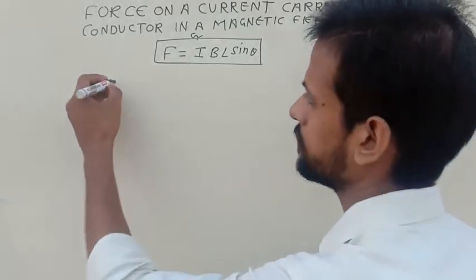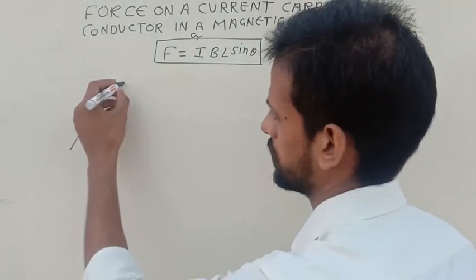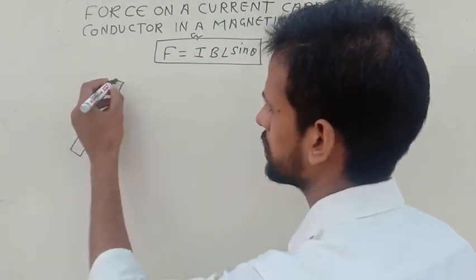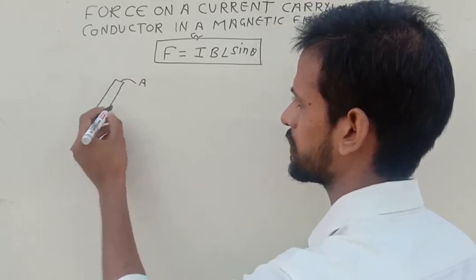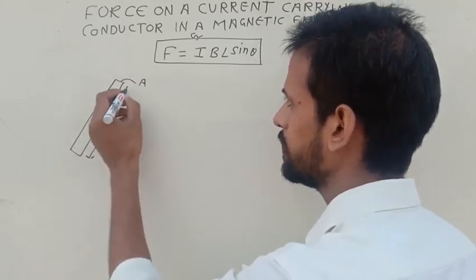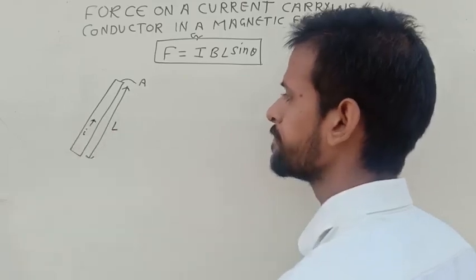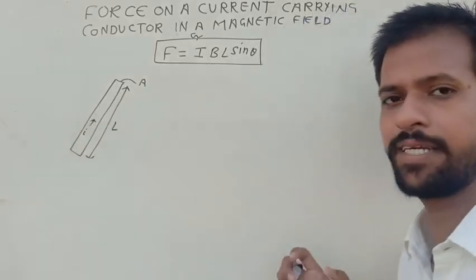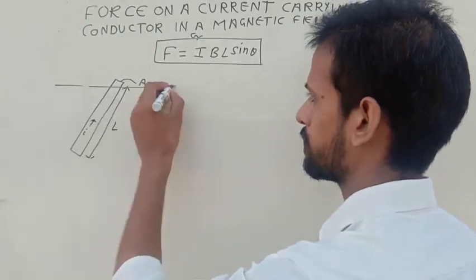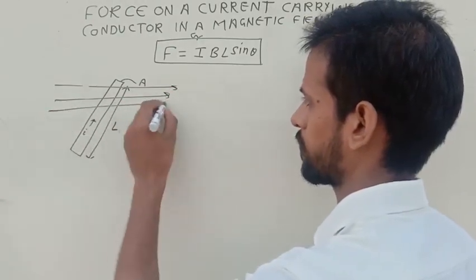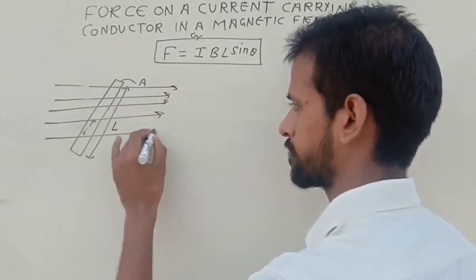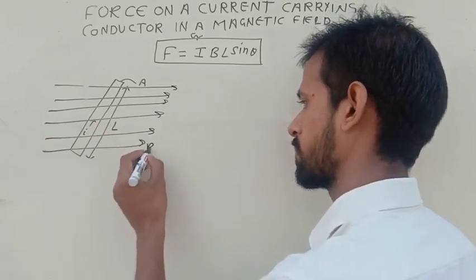So first of all, let us consider a conductor whose area of cross-section is A, length is L, and current is flowing in this direction with drift velocity VD. And this is the magnetic field B.